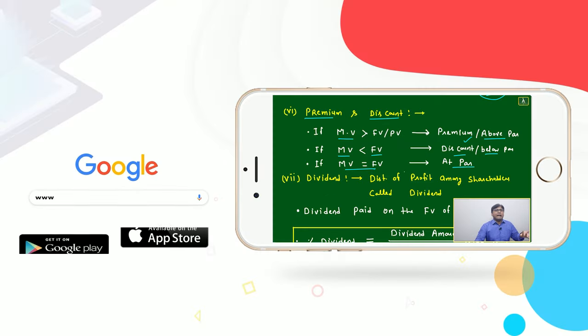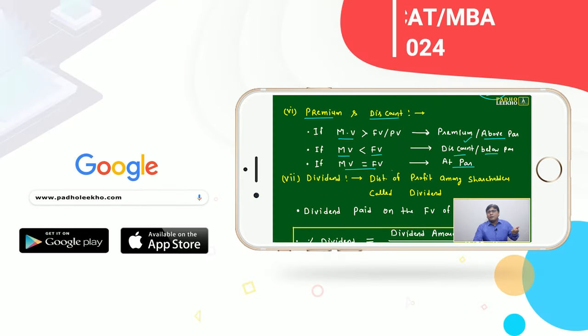Market value means a little higher than the face value. But suppose you got the chance to purchase at par - at par means market value is equal to face value.